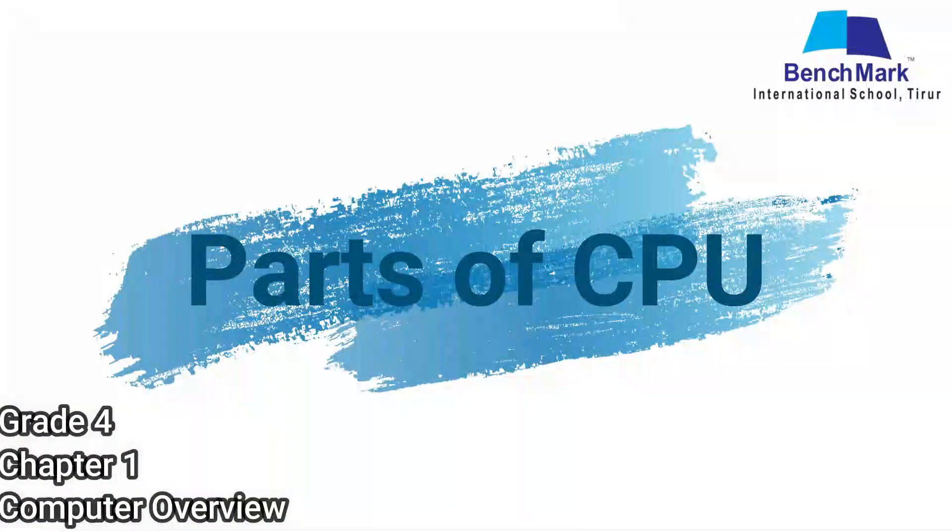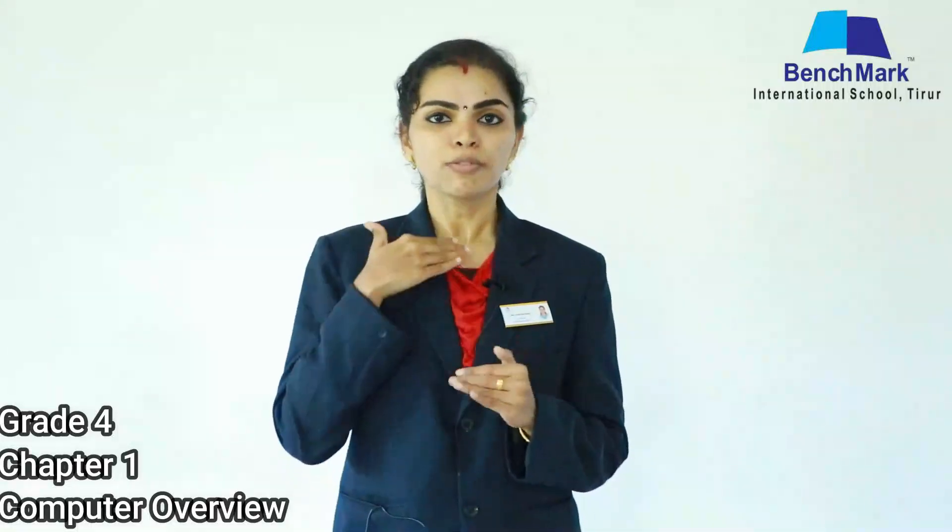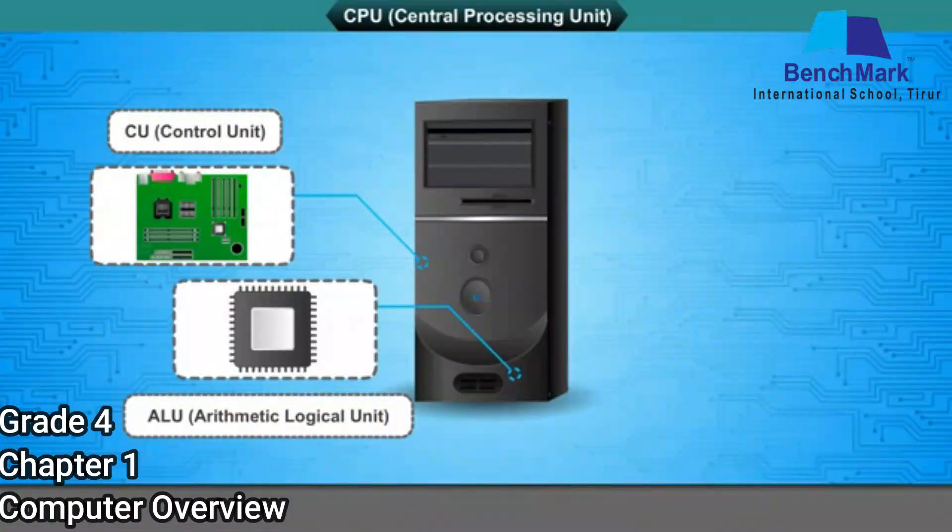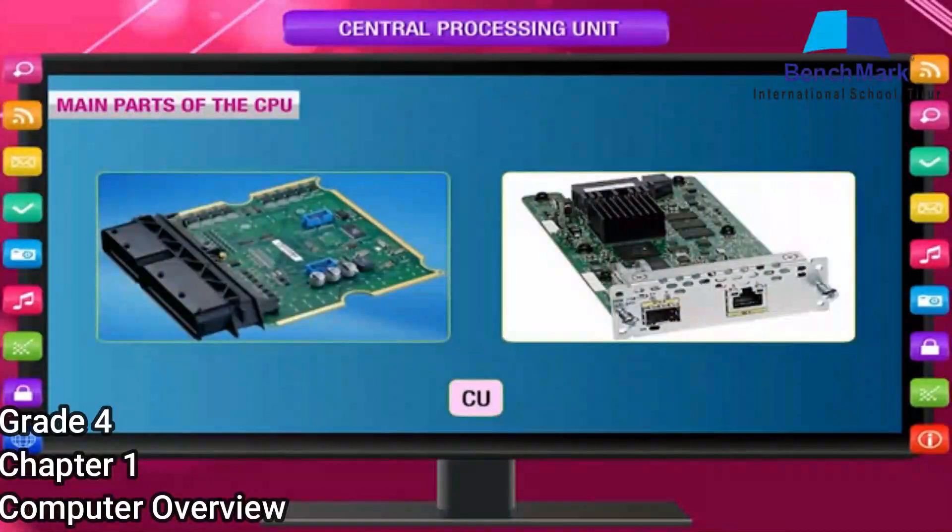Why do we call the CPU the brain of the computer? It performs most of the operations that our brain does. Our brain first controls and coordinates all parts of our body. Second, it stores memories — situations we face are stored in our brain. Third, the brain has the ability to perform arithmetic operations and logical thinking. These same abilities exist in the computer, divided into components: the control unit, the memory unit, and the arithmetic and logic unit. The control unit decides which inputs to take and when to take them, controlling and coordinating the overall function of the computer system.